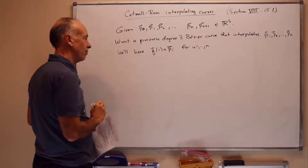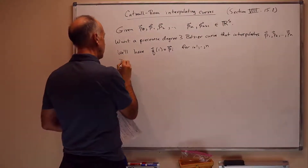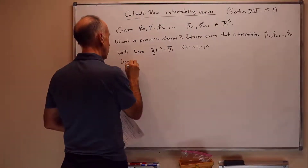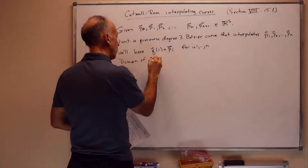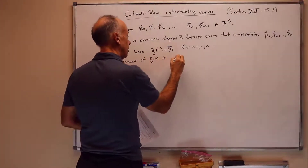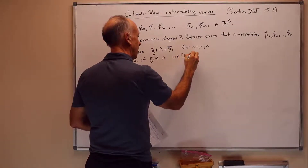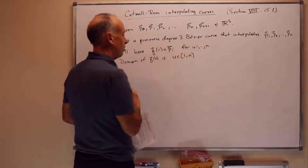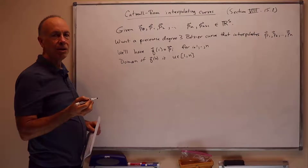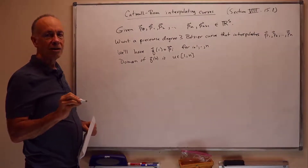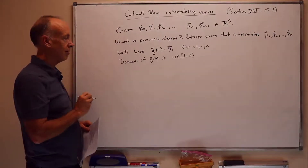So you'll notice the curve doesn't pass through P0 or Pn+1 at all — they're just there to help get things started and finished. The domain of Q is u in the interval 1 to n. So the curve starts at P1, ends at Pn, and passes through successively each point in order given.